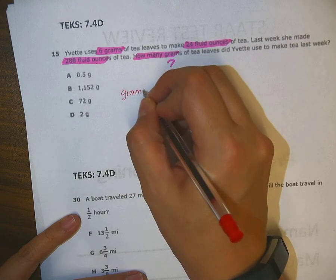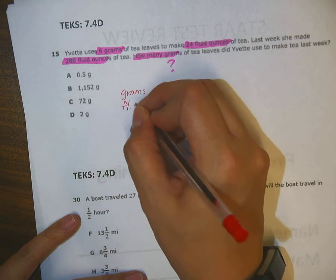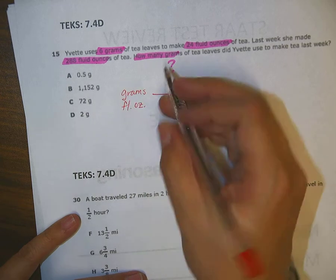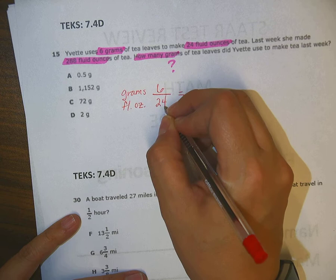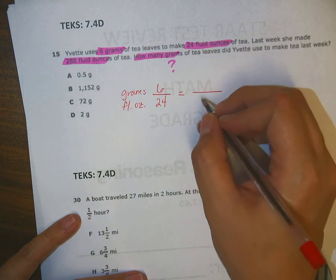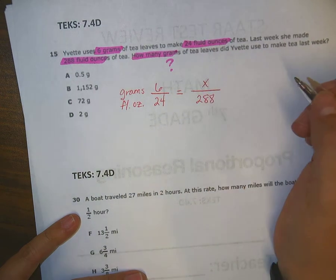And my two units of measurement are grams and fluid ounces. So I would simply just set it up this way. Grams are going to be my top numbers and fluid ounces will be my bottom numbers. 6 grams as I read, 24 ounces, 288 fluid ounces, and then 288 has to go on the bottom because of that label, right? This is my unknown.